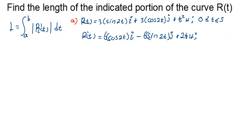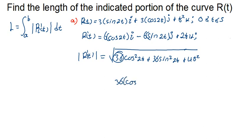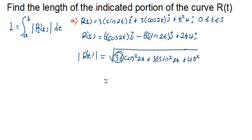What we need to find next is the magnitude of this first derivative. Squaring each component, we get 36cos²(2t) plus 36sin²(2t) plus 4t². We can factor out the 36 to get 36(cos²(2t) + sin²(2t)) plus 4t². Since cos²(2t) + sin²(2t) = 1, this simplifies to 36 plus 4t².